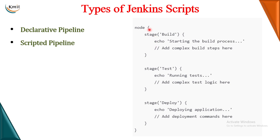The next one you have is stage, which is similar to the declarative pipeline - one for build, test and deploy. Stages are the projects you are creating in your Jenkins. Inside the stages, along with printing the output, you can even add some complex build steps. For example, you can add if-else loops, conditional statements - you can say if this condition is satisfied then do this task. You can add multiple complex build steps which is not actually possible in your declarative pipeline.